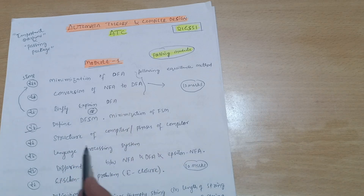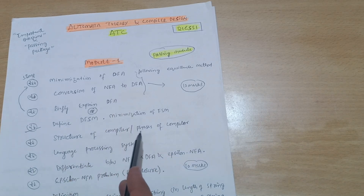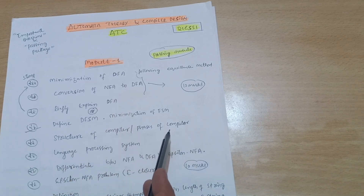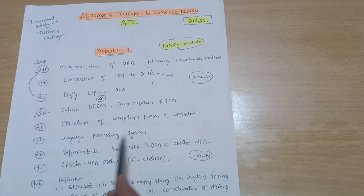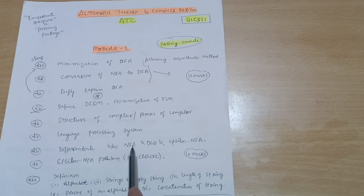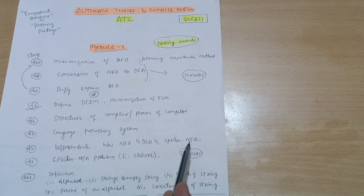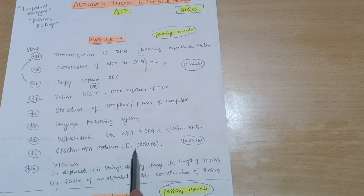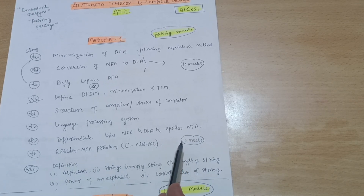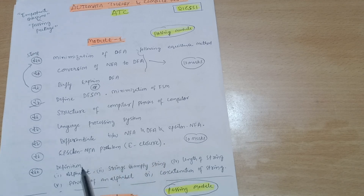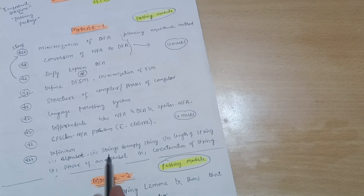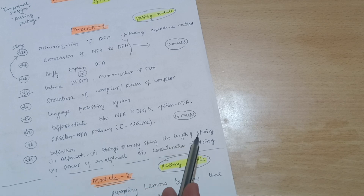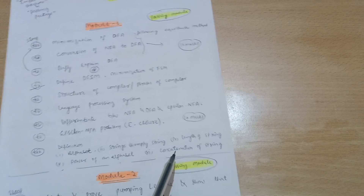Also in Module 1: the structure of a compiler and phases of a compiler — most important. Language processing system, and differentiate between NFA, DFA, and epsilon-NFA — these are theoretical concepts. Epsilon-NFA problems and e-closure, and De Morgan's questions may appear there. Also the definition part: alphabet, strings, empty string, length of string, power of an alphabet, and concatenation of strings.